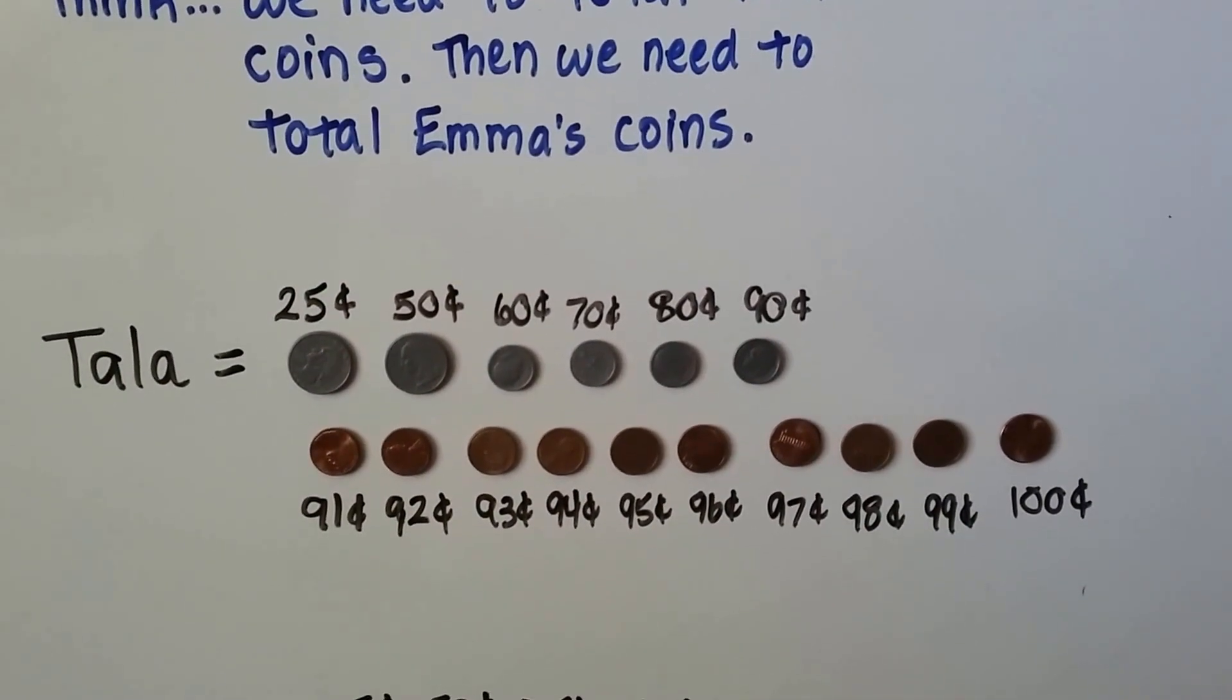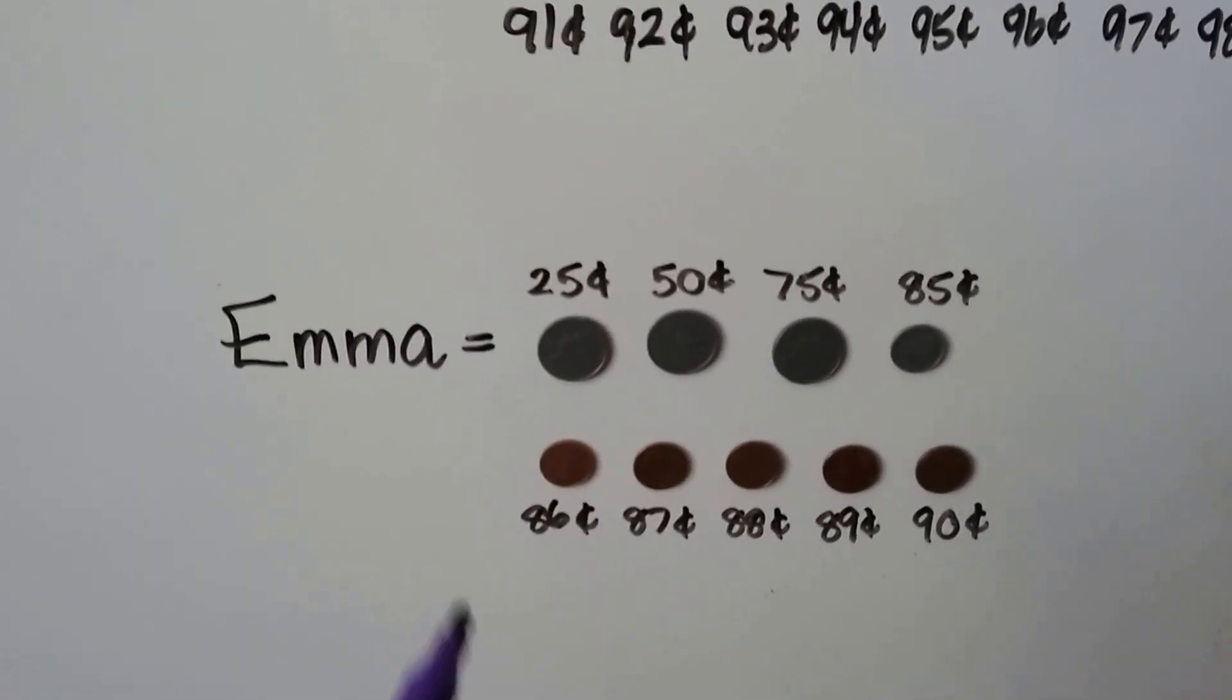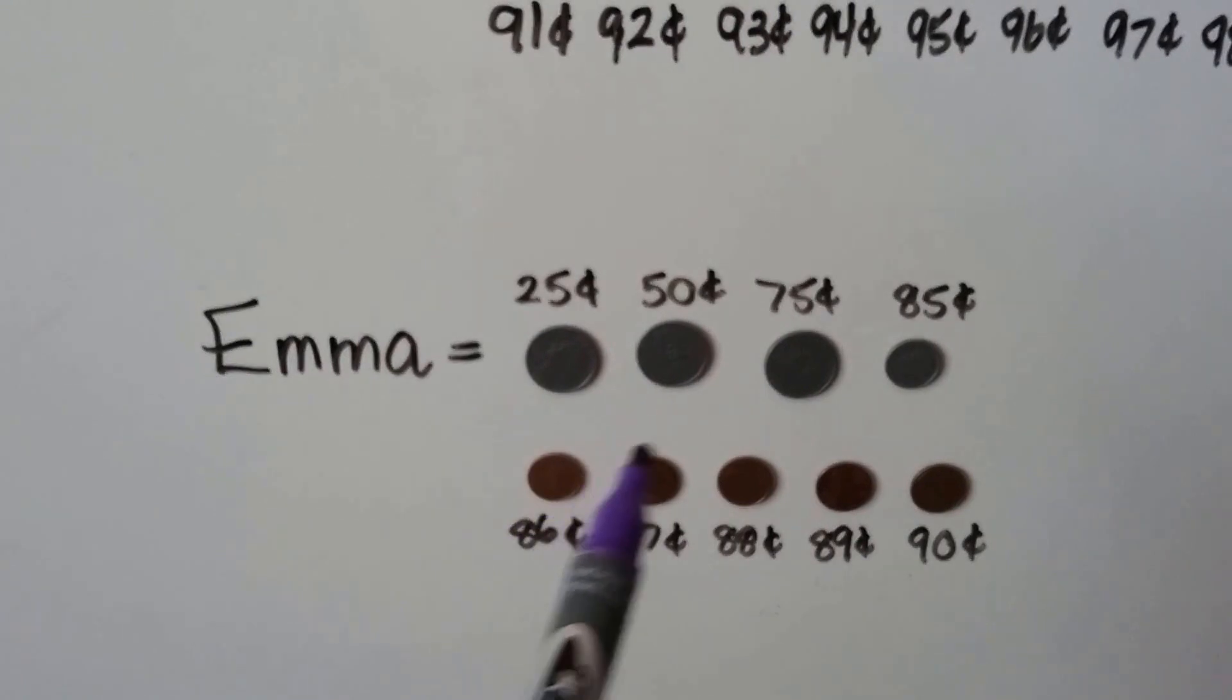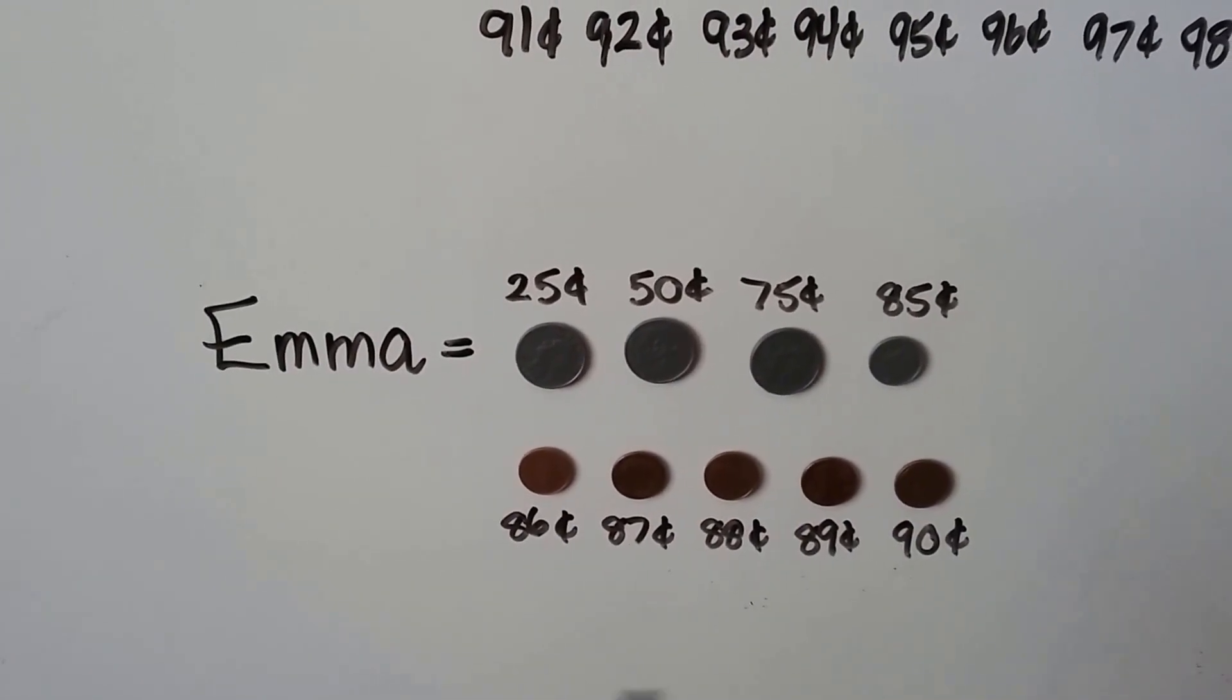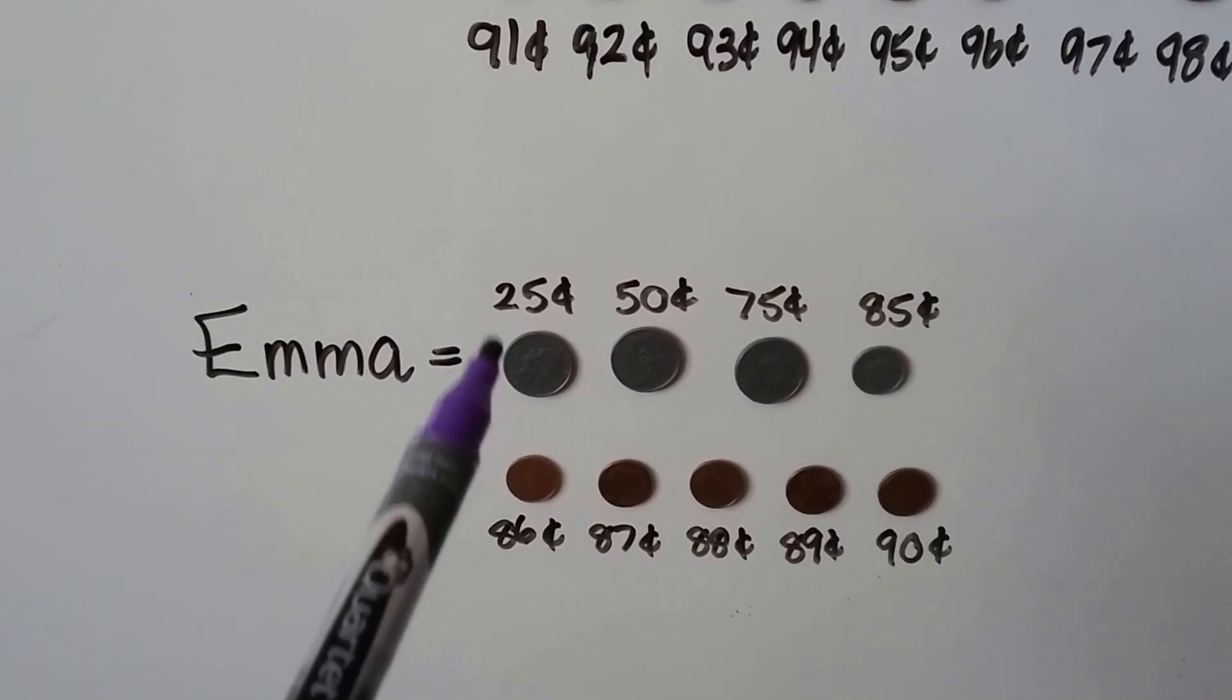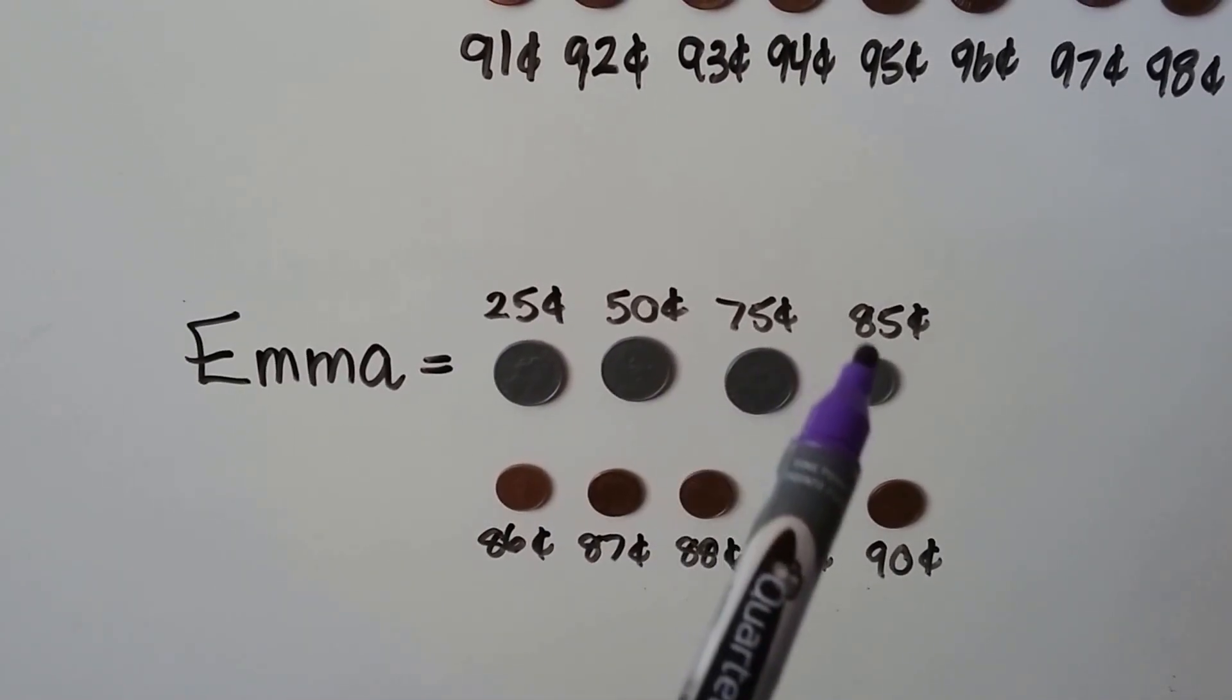Let's see how much Emma's got. Emma's got three quarters, one dime, and five pennies. We can count by 25: 25, 50, 75. And 10 more would be 85.